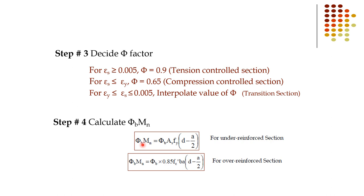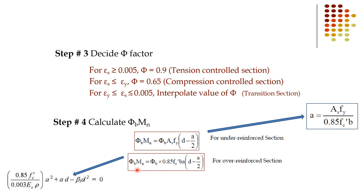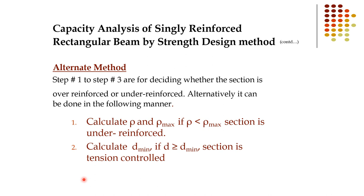Step 4 — the final step: Calculate moment capacity φMn. For a tension-controlled (under-reinforced) section: φMn = φ·AS·FY·(d − a/2). For an over-reinforced section: φMn = φ·0.85·FC′·b·a·(d − a/2). The only difference is how A is calculated — using the under-reinforced formula or the over-reinforced quadratic formula.